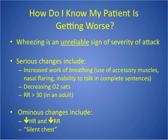So let's look at what actually indicates worsening. Serious changes that tell us the patient is working harder are those showing increased work of breathing: use of accessory muscles, nasal flaring, and inability to talk in complete sentences. Also, if O2 saturations are dropping, that's obviously not a good sign. In an adult, if the respiratory rate is over 30, that's also a bad sign — though in kids we can see respiratory rates much higher, so increased work of breathing symptoms are more important than the rate alone.